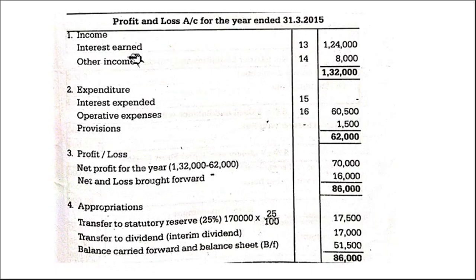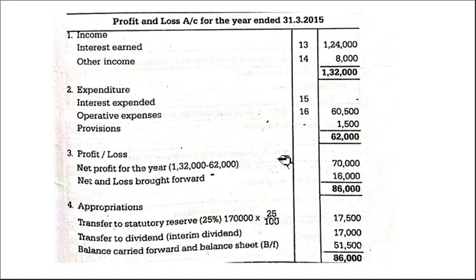So in the profit and loss account: interest earned, Schedule 13. Other income, Schedule 14. Interest expended, Schedule 15. Operating expenses, Schedule 16. Then provisions. Then net profit for the year. Previous year brought forward. Then appropriations.